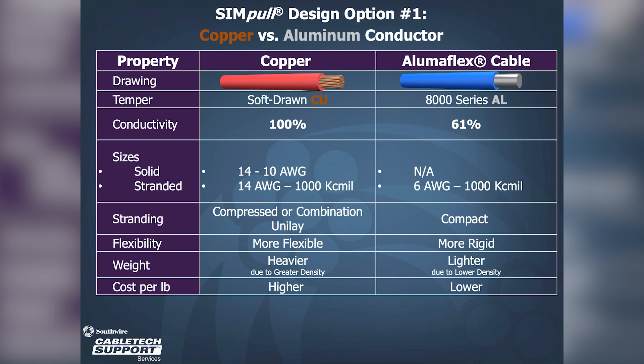For aluminum conductors, we offer our 8000 series aluminum alloy trademarked as AlumiFlexflex. AlumiFlexflex conductors are 61% as conductive as copper and are offered in solid conductors from 12 gauge to 4-aught, and in stranded conductor sizes from 12 gauge to 2,000 kcmil. Our standard stranded configuration is compact aluminum, which is more rigid than our stranded copper designs.